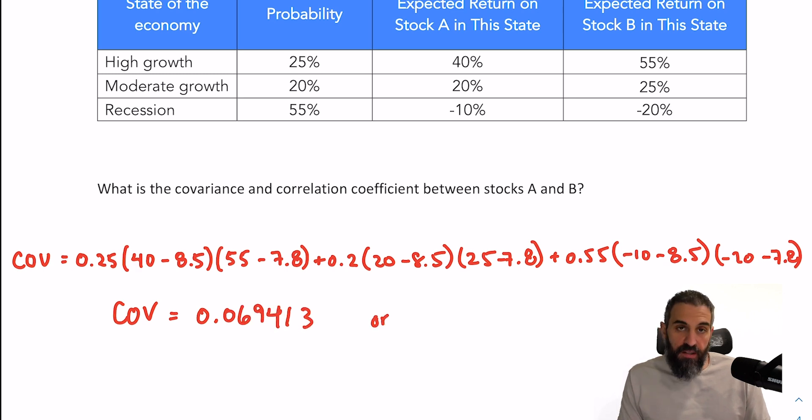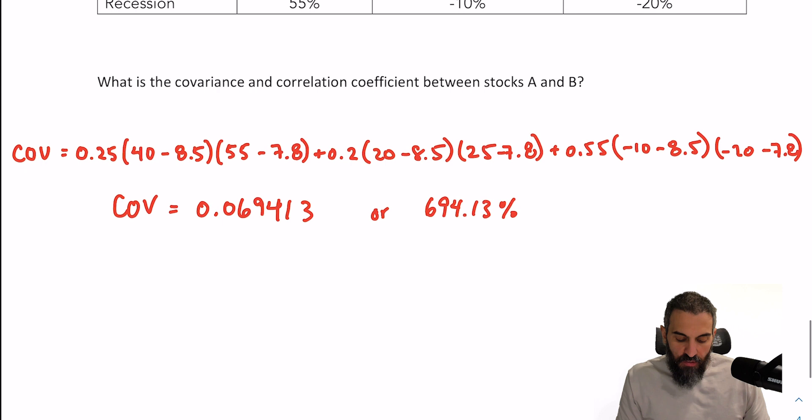And that should give you a covariance of 0.069413, or if you did it in percentages, 694.13%. A little interesting thing to note for the covariance: if you want to convert a covariance from a decimal to a percentage, you need to multiply it by 10,000 and not 100, which we're all kind of used to doing. So that's important. And if you want to go back from percentage to decimal, you divide by 10,000.